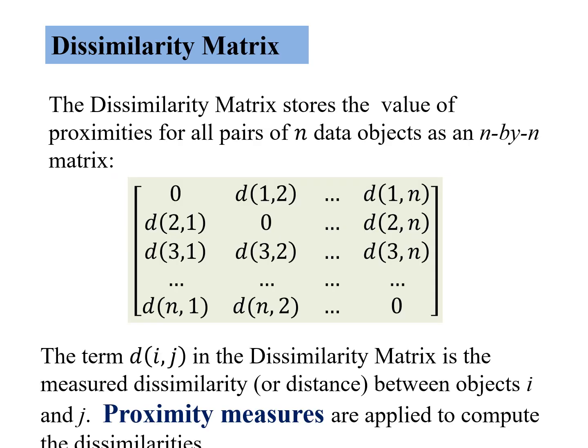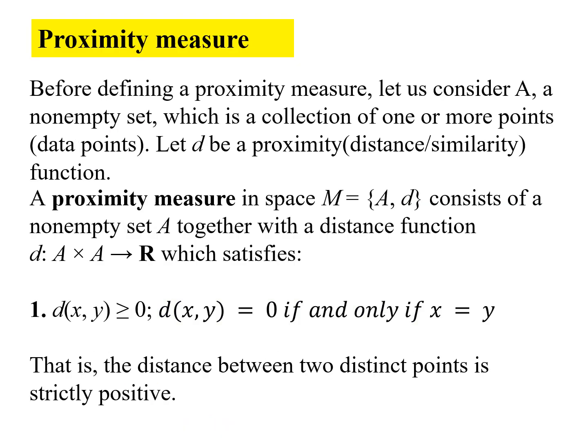What is the dissimilarity matrix? It stores the value of proximities. Proximity can be dissimilarity or similarity; we can measure it either way for all pairs of n data objects in an n cross n matrix. To compute these distances, we would need proximity measures which we will very soon see.